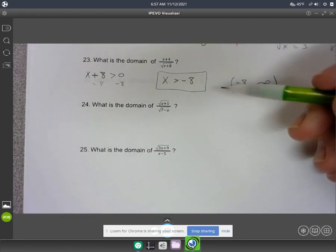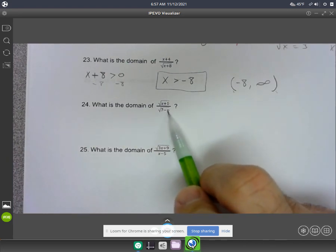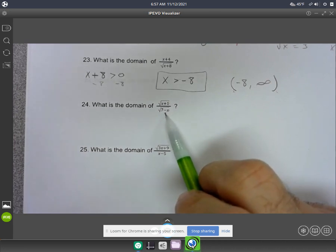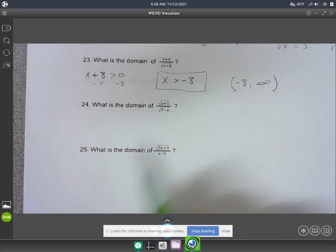And then you might think, what's the biggest possible number? Well, it's going to be related to this guy down here. The biggest possible number is going to be 7, but you can't actually include the number 7 because it would cause a 0 in the bottom.